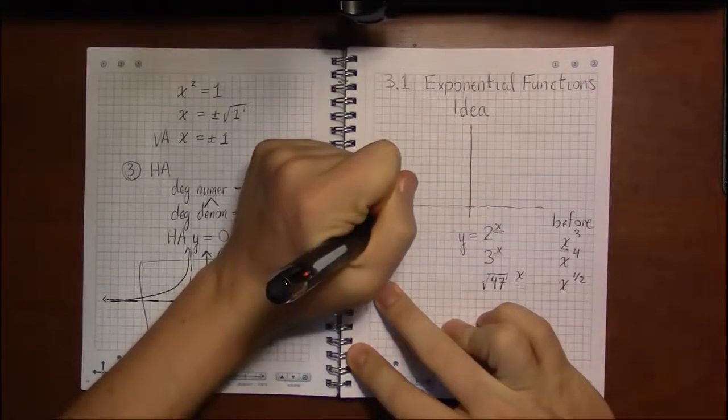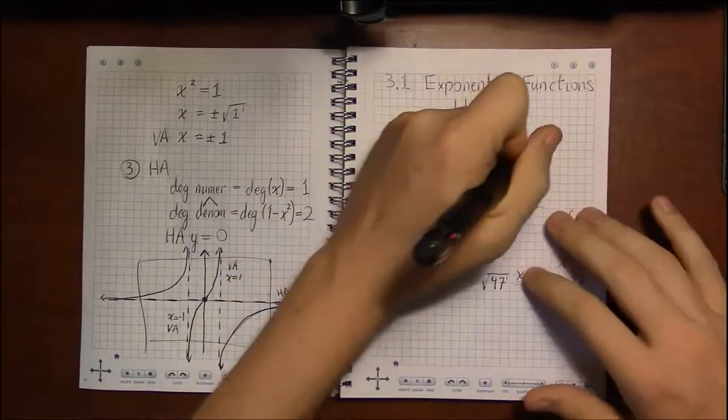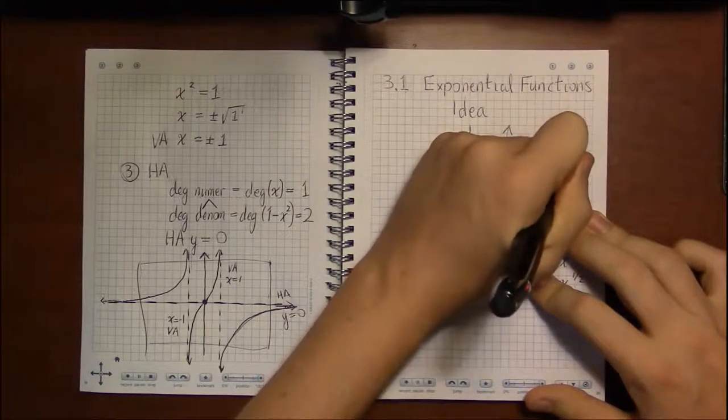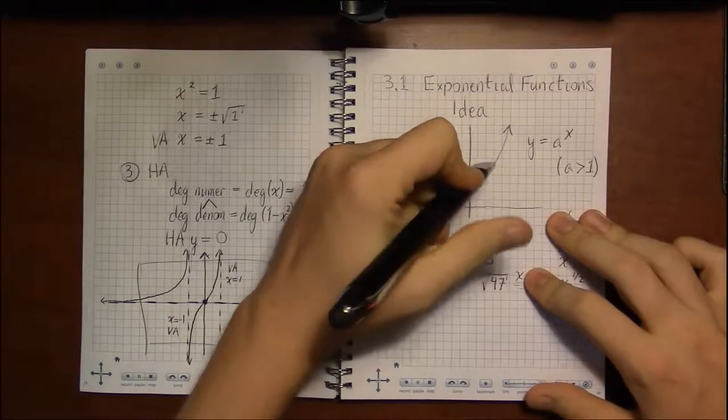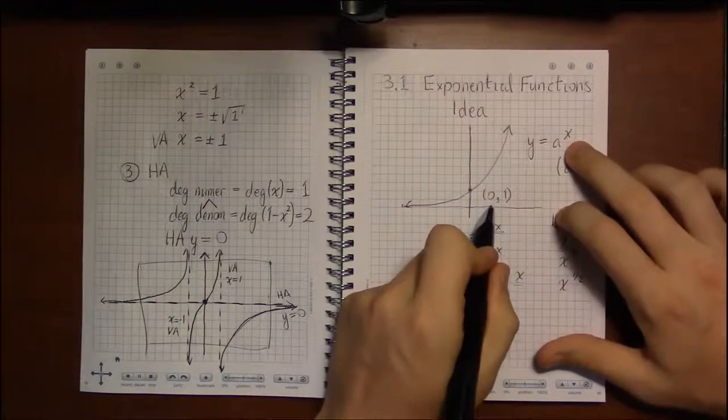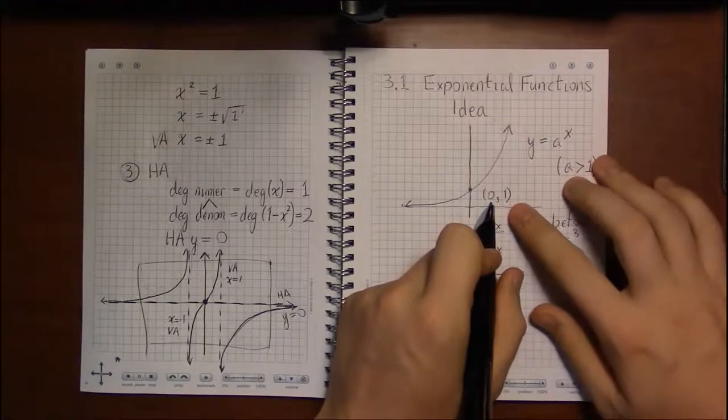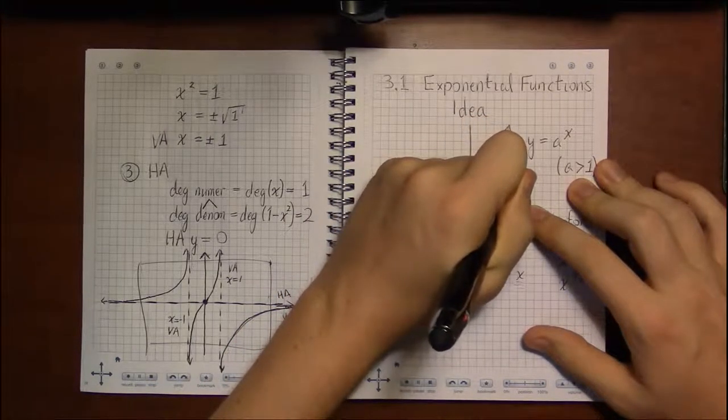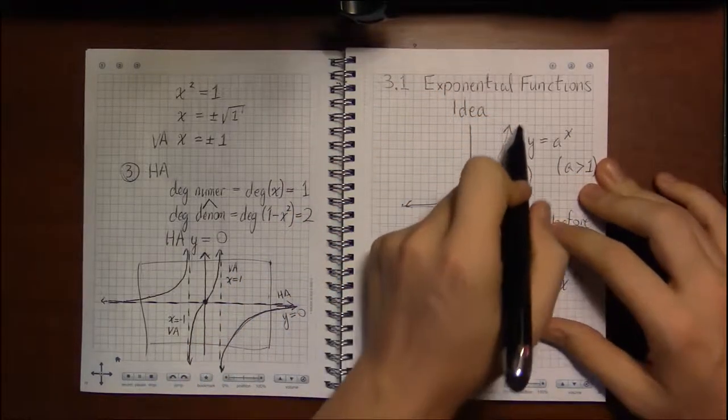And in general, they look like the following: y equals a to the x where we're assuming in this case that a is larger than 1. It passes through a number of points, passes through the point 0,1 because anything to the 0th power is 1. So whenever you replace 0 for x, a to the 0 is going to give you 1. At x equals 1, you're at the point a. At 2, you're at a squared, 3, a cubed, and so forth and so on.